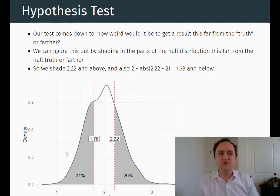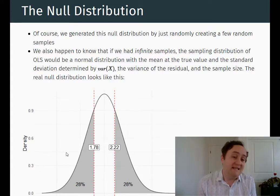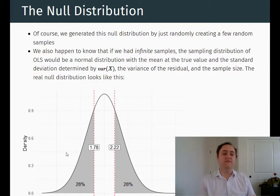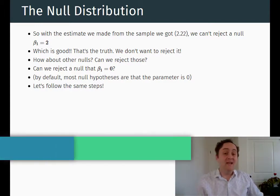Now, this lumpy particular distribution I got just from some random samples, we happen to know that as samples go to infinity, then an ordinary least squares estimator is normally distributed, so we can smooth this out a little bit. And it looks like this. It doesn't change things that much here. Here we have 28% above that cutoff and 28% below that cutoff. When you add them up, you get 56% likely to get something as weird or weirder if the null is true. Now, we can't reject that the truth is 2, which is good, because the truth actually is 2.